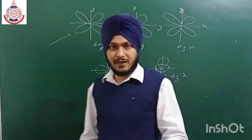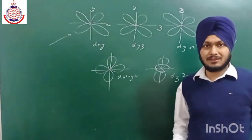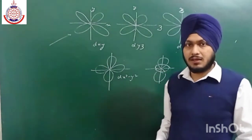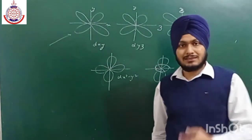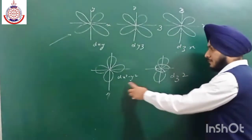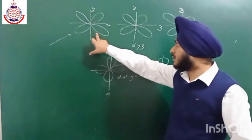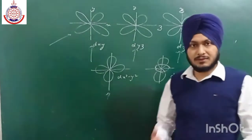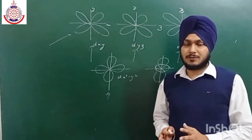When ligands approach along the axis, they are head-on with the two d orbitals (dz² and dx²−y²) and there is less repulsion. In an octahedral case, ligands feel large repulsion when approaching in between the axis, so they approach along the axis instead. That is why these two axial orbitals feel repulsion and their energy increases, while the three between-axis orbitals feel some stability and their energy decreases — causing orbital splitting.